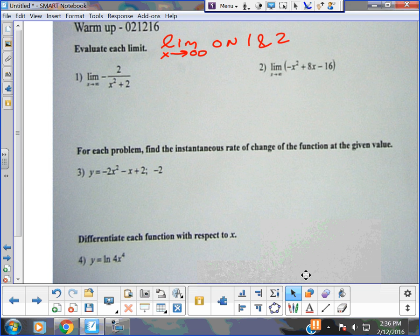Alright, so the first two say evaluate each limit. You can't hardly read it, but it's limit as x goes to infinity. The function is the opposite of 2 over x squared plus 2. So you picture putting in infinity, infinity squared is huge, 2 over infinity, well that's going to be 2 over a gigantic number, it's going to go to 0.